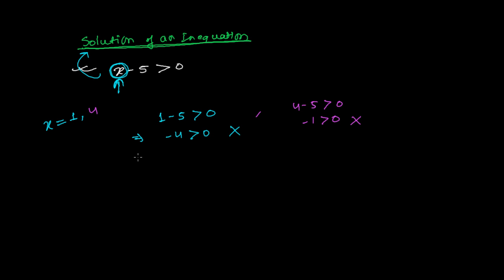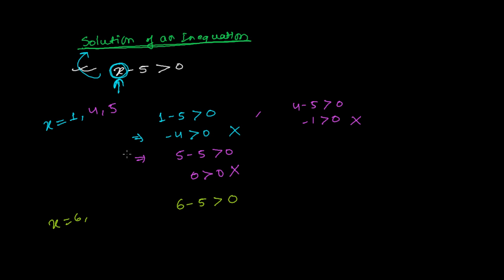What about if I am putting x equals to 5? Then 5 minus 5 is greater than 0, that means 0 is greater than 0 — that is again false. So 1, 4, 5 — these are not solutions of this inequation. What about x equals to 6? Then 6 minus 5 greater than 0 gives us 1 is greater than 0, and that's absolutely right.